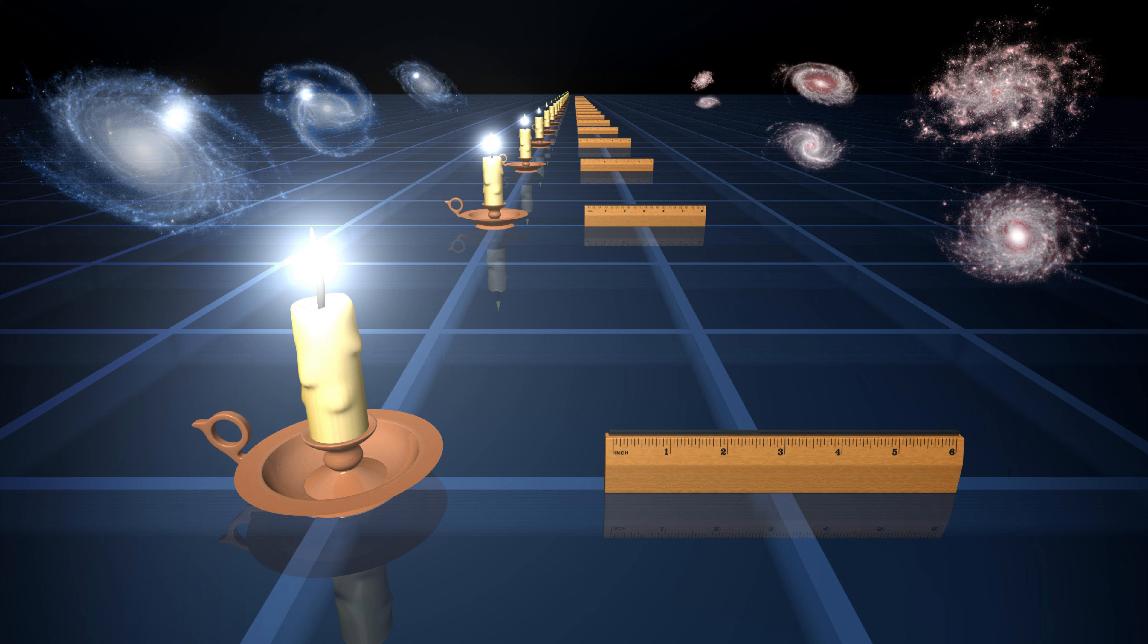There are actually a few candidates for the shape of our flat universe. The first one, obviously, is infinite Euclidean space. This is the most common visualization, a boundless and infinite space where parallel lines remain parallel forever. However, this can be very difficult to conceive on a cosmic scale.